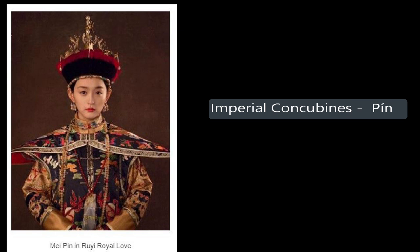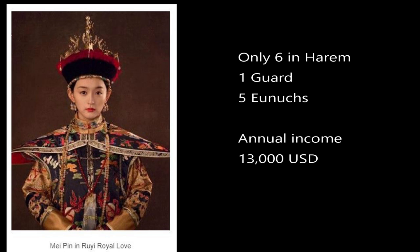The fifth rank is imperial concubine, or in Chinese, Pin. Only six Pin can be in the imperial harem at a time. Pin can have one guard, five units, and her annual income is $13,000. Pin is the rank that allows her to be mistress of her own palace. Any concubine below Pin can't live in a main hall — they need to live in a side hall only, and are under the control of the mistress of the main hall. Pin and above have their own promotion ceremony, their names are recorded in clan books, and they are considered high-rank consorts. The emperor's edict was also given with a high-quality gold seal, jade book, sedan, and official court attire to those of Pin rank and above.